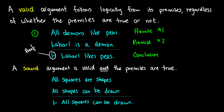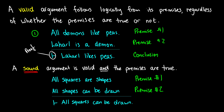In this case, we don't know if the first or second line is true. When we talk about valid arguments that also have true premises, we call those sound arguments. For instance: all squares are shapes — premise one, a true premise. All shapes can be drawn — premise two, also true. If we scale them down small enough, we can draw any two-dimensional shape. Therefore, all squares can be drawn. It's valid because of the structure, and it's also sound because both premises are true.